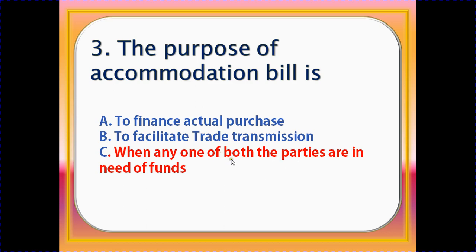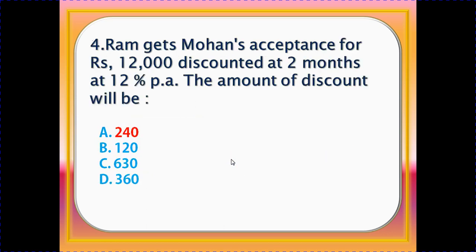Ram gets Mohan's acceptance for rupees 12,000, discounted at 2 months at 12% per annum. The amount of discount will be calculated at 12% per annum.